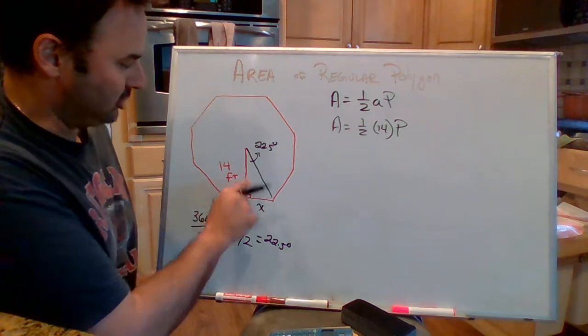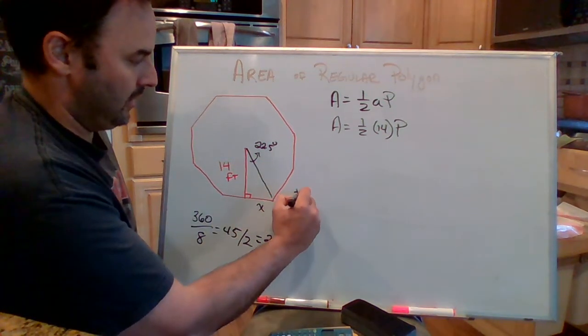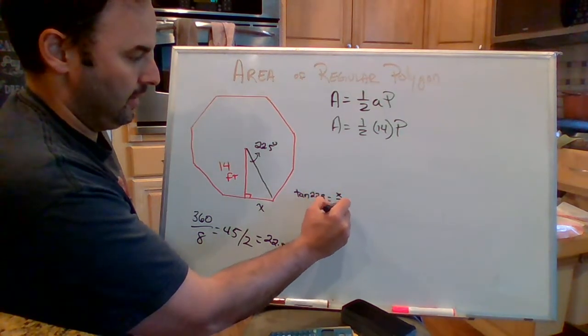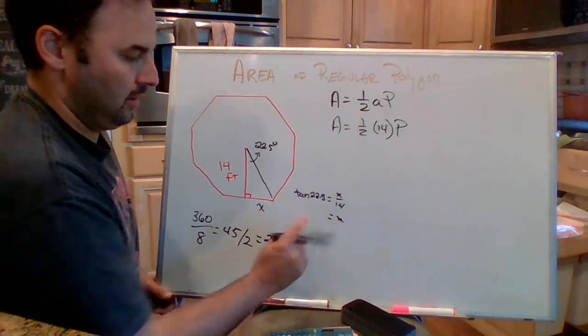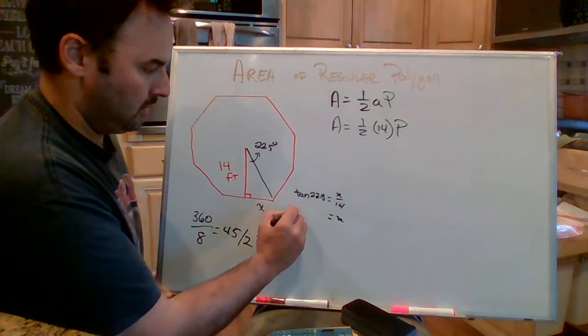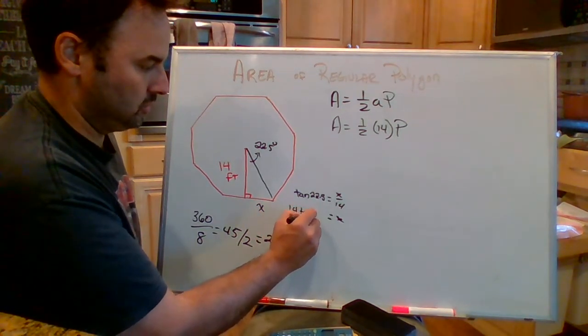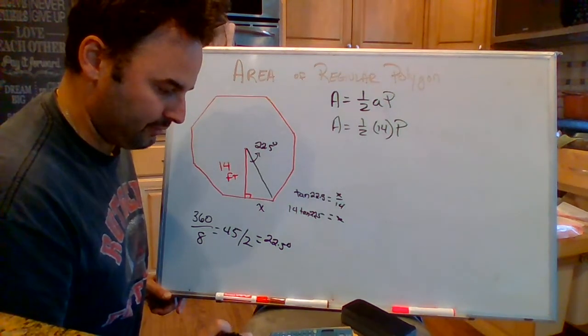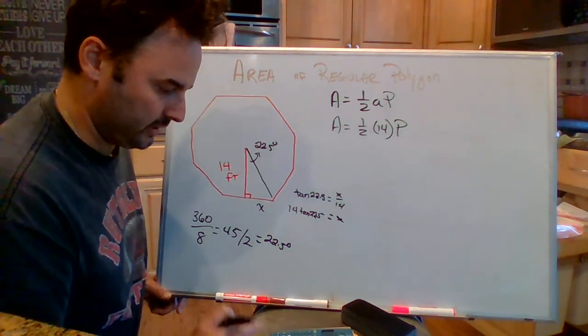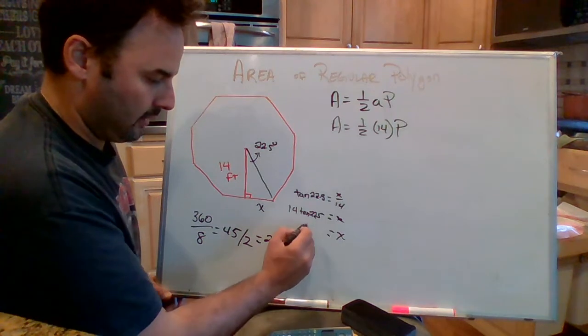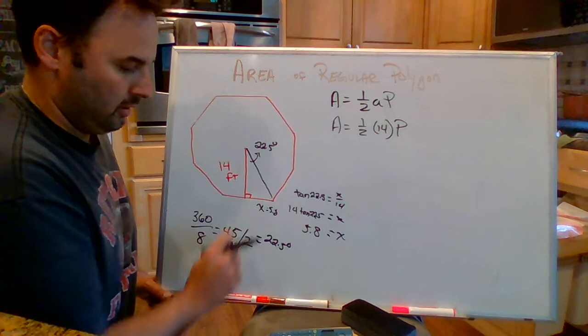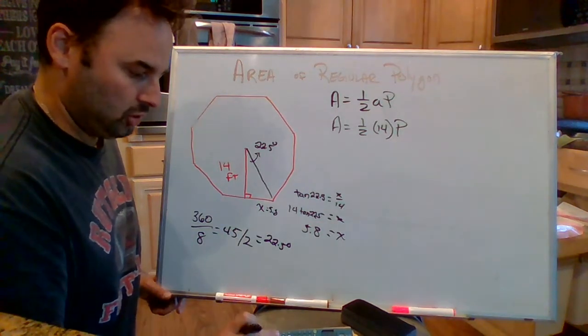Okay, so here again, I'm going to have tangent. The tangent of 22.5 is x over 14. x is 14 times the tangent of 22.5. So the tangent of 22.5 times 14. x is 5.8. That's 5.8. So 5.8 times 2.